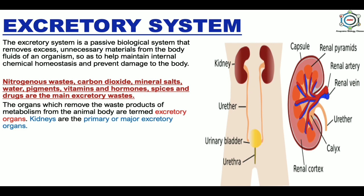The organs that help in the process of excretion are known as excretory organs, divided into primary and secondary excretory organs. In our body, kidneys are the primary or major excretory organs. Other secondary organs that also help in excretion are liver, skin, lungs, and large intestine. The liver helps in the breakdown of excess amino acids, skin helps in elimination of excess salt and water, lungs help in exhalation of water vapor and CO2, and the large intestine helps in elimination of solid waste.